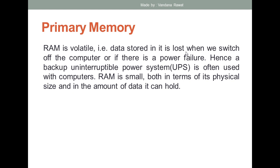Volatile means data stored in RAM can be lost when the power is switched off or if there is a power failure. As a backup, you can use a UPS — Uninterruptible Power Supply — so that power failure does not cause data loss. UPS is often used with PCs. RAM is also small both in terms of its physical size and the amount of data it can hold, compared to secondary memory.